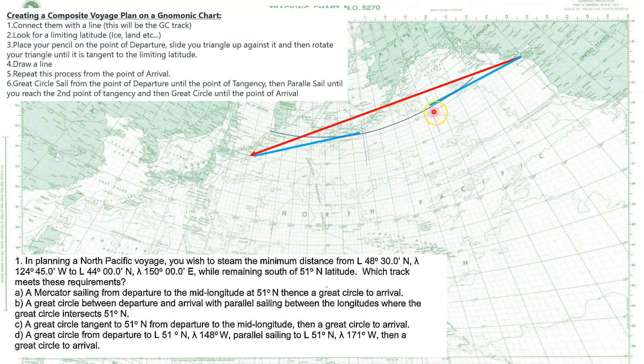Sometimes they might ask you what longitude you'll start parallel sailing — there can be a variety of ways they'll ask this — but that's how you do composite sailing. Hope that helped.